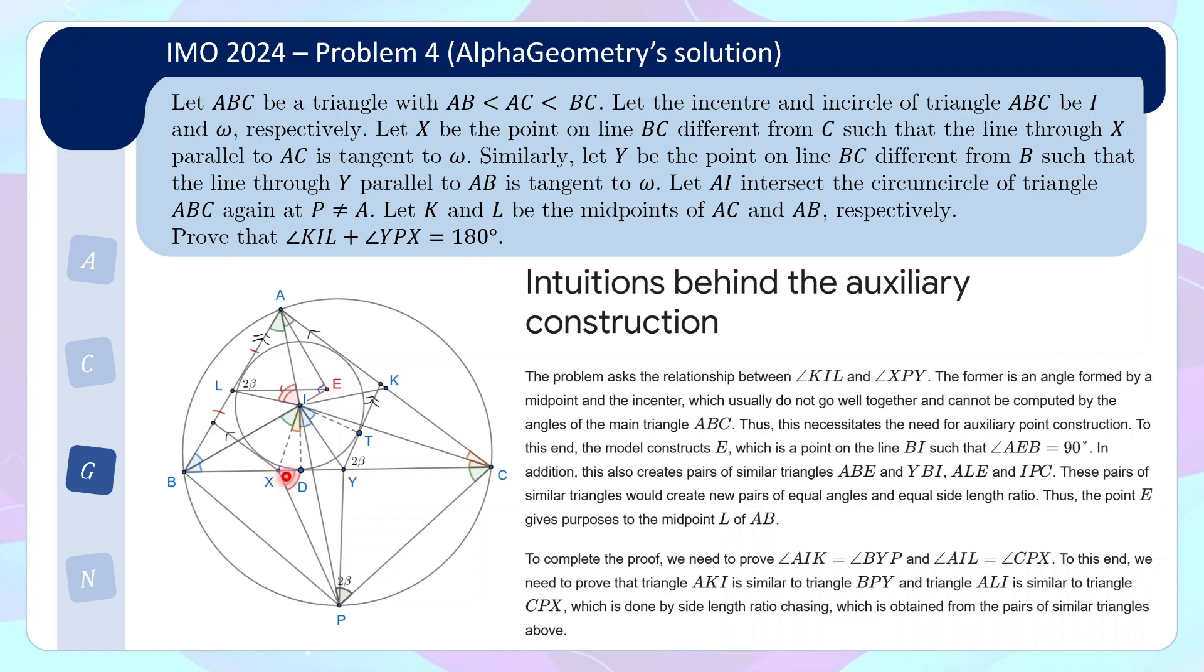But remember in the human solution that I presented, most people will extend the two parallel lines here and meet at a newly constructed point Q. But in this case, the model decides to construct E so that it can create the similar triangles that we proved earlier on. And then these pairs of similar triangles will create some length ratio and it also gives purpose to the midpoint L of AB, which I can kind of see it happening because this gives us the AL equals LB equals LE relationship. And then, well, to prove the statement, the idea is, well, the author actually wanted to move the angles down here so that you get a sum of angles in a triangle. And to this end, we want to show some bunch of similar triangles which can be done by side length ratio tracing, blah, blah, blah. So, well, some retroactive, retrospective, you know, explanation of the construction point.